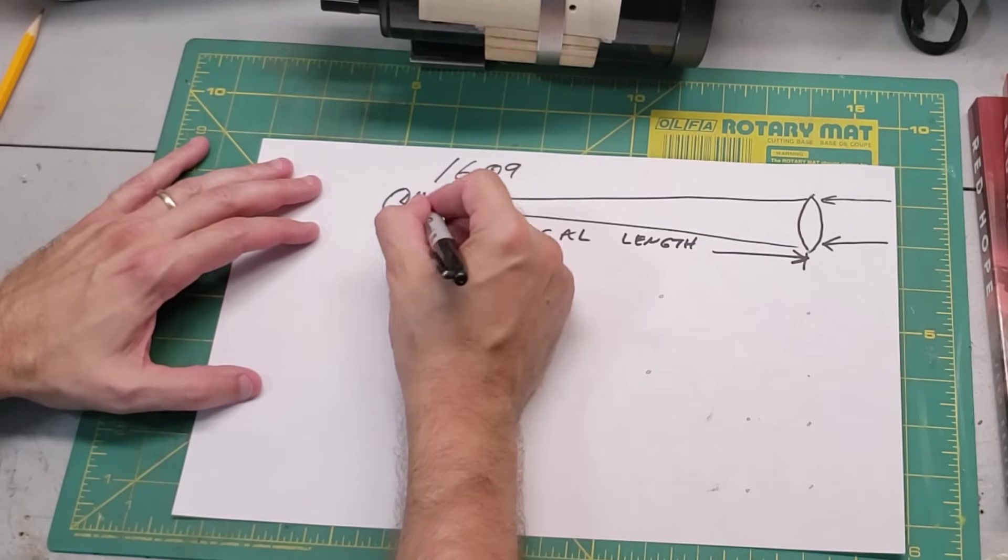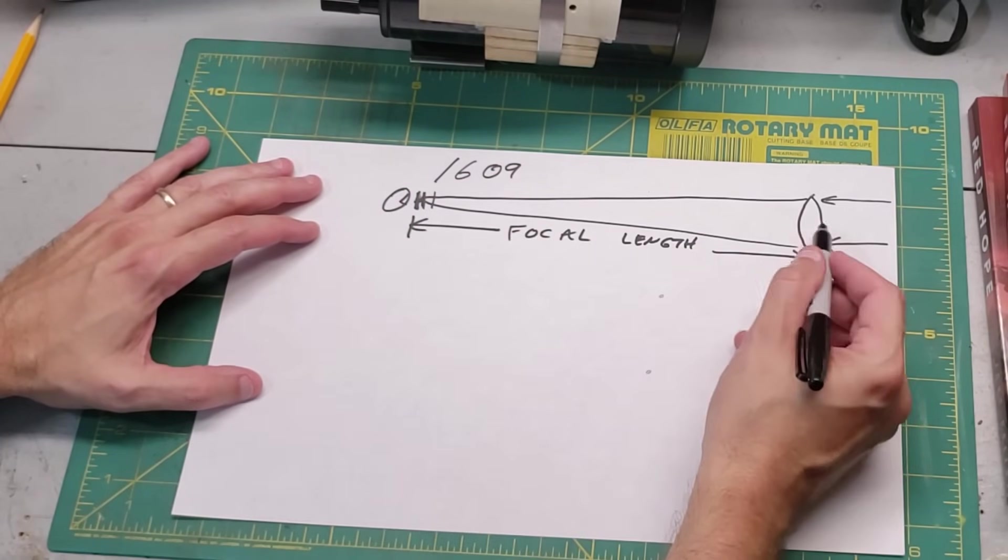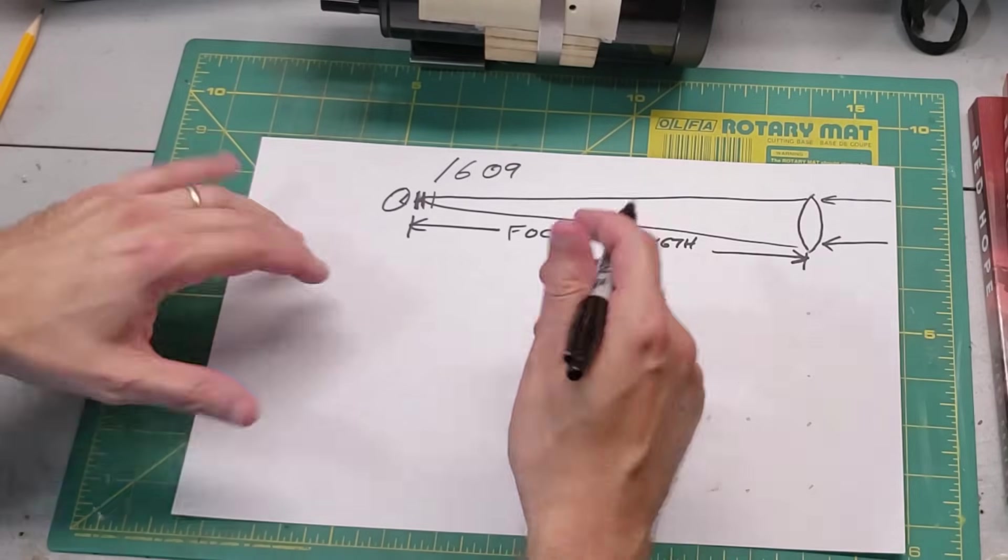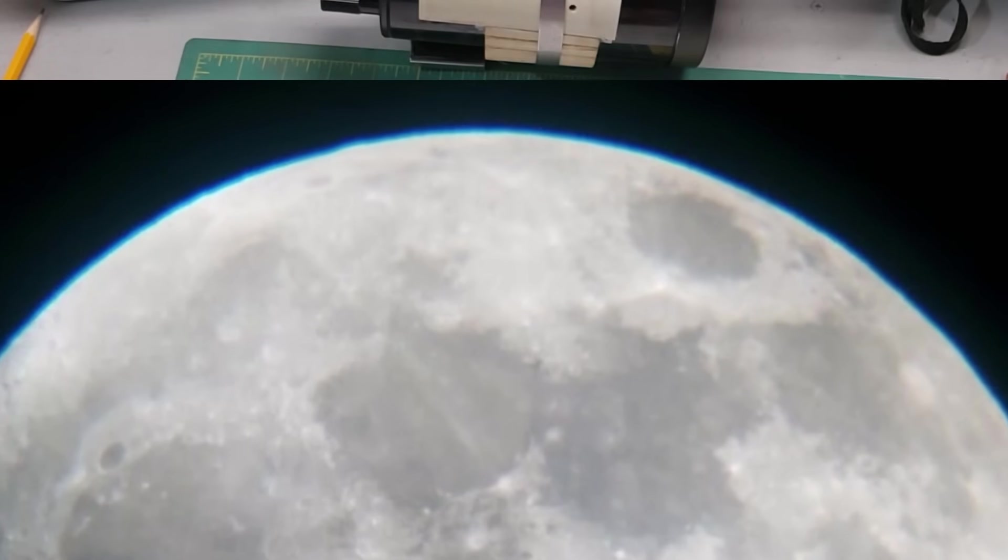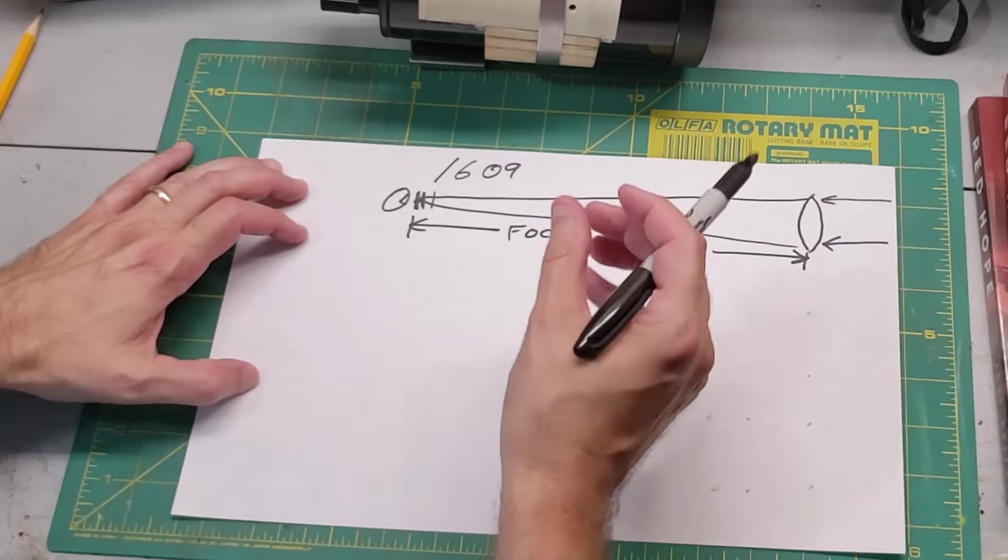One classic way you can see this is if you have a very simple single-lens refractor telescope and you look at the moon, you might actually see kind of a blue fringe around the moon. What you're actually seeing is chromatic aberration.